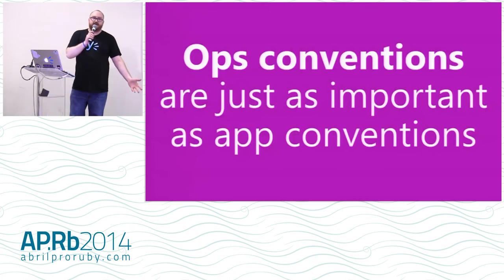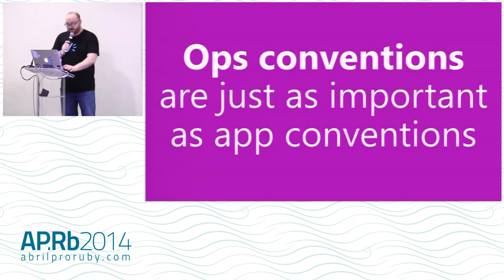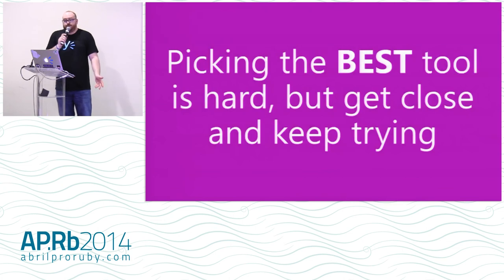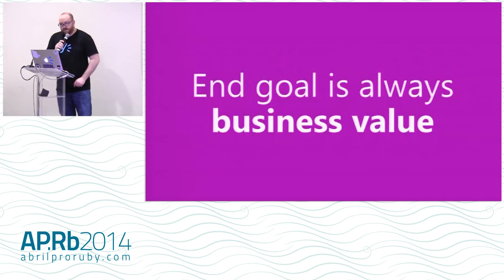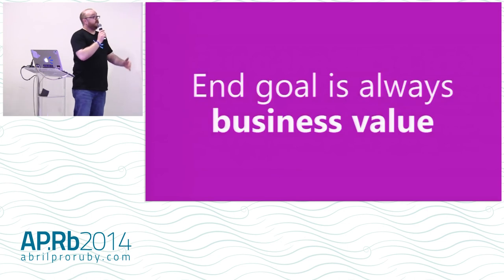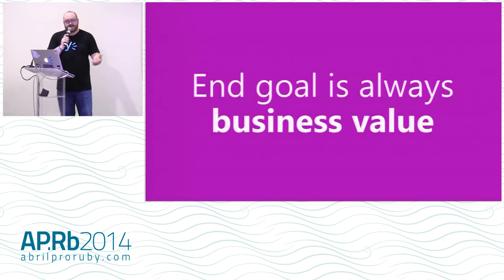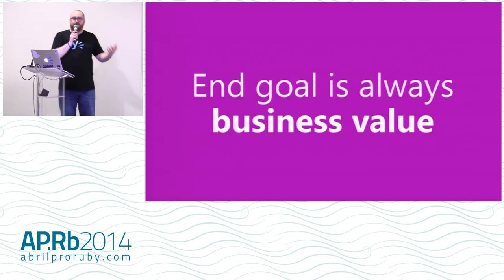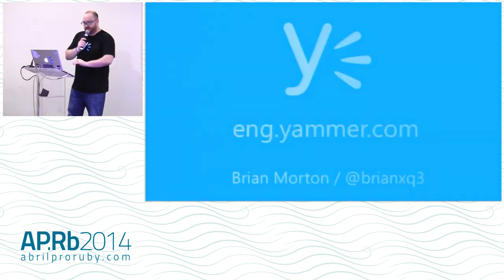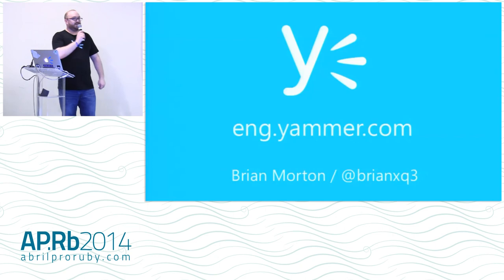Let me recap with three quick points. First: ops conventions are just as important as app conventions — being able to put things into production, know what they look like, and do this repeatedly and quickly is super important. Second: picking the best tool is really hard, but get close, keep trying, keep evaluating. Third: the end goal is always business value. This is why we're all here, why we're all programmers — delivering business value to customers. We need to constantly ask ourselves: does any of this help us move faster, make more informed decisions, are we reinventing the wheel, or does this really help us provide better business value? That's all I've got — my name is Brian, thanks for having me.